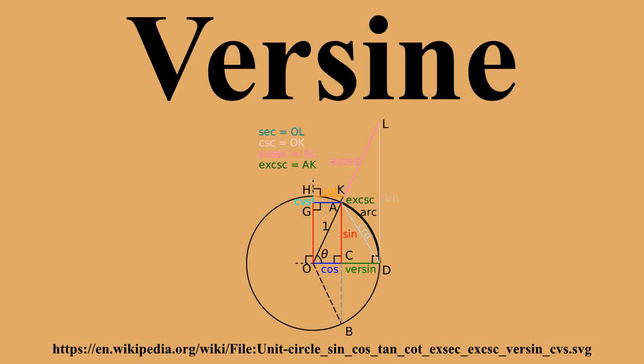The versine appears as an intermediate step in the application of the half-angle formula sin squared equals one-half versine, derived by Ptolemy, that was used to construct such tables.